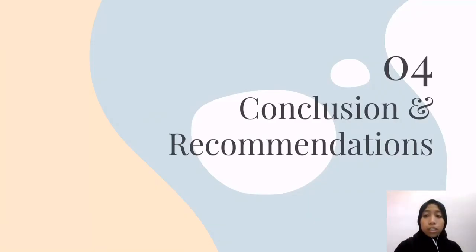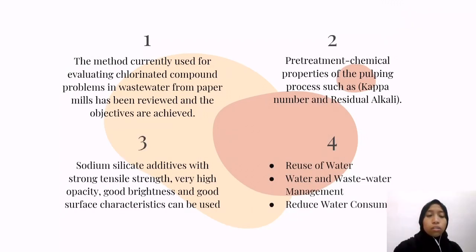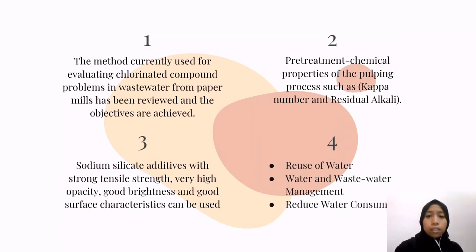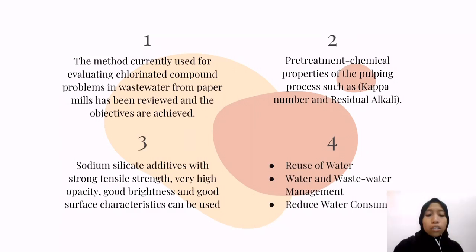In conclusion, the method currently used for evaluating chlorinated compound problems in wastewater from paper mills has been reviewed and the objectives are achieved. The pre-treatment discovered from the paper involves chemical properties of the pulping process such as Kappa numbers and residual alkali. Sodium silicate additives with strong tensile strength, very high opacity, good brightness, and good surface characteristics are used to eliminate the problems of chlorinated compounds in wastewater of paper mills. Other recommendations that can be implemented include reuse of water so that it does not cause harm to the environment, and the industry can also reduce water consumption so that lower levels of suspended solids are released to the environment.